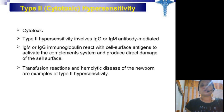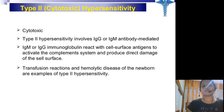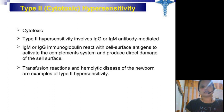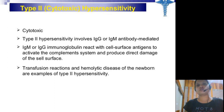Type 2 hypersensitivity is called cytotoxic. It involves IgG or IgM antibody-mediated reactions. These antibodies react with cell surface antigens to activate the complement system and produce direct damage to the cell surface. Blood transfusion reactions and hemolytic disease of the newborn are examples of type 2 hypersensitivity.